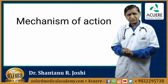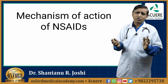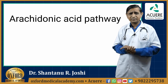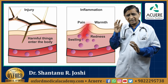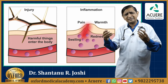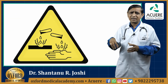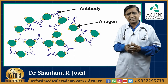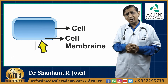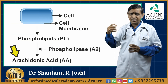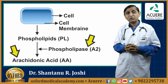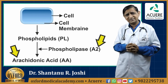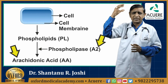First, we will see their mechanism of action. Before going into the details of mechanism of action of NSAIDs, one must understand the arachidonic acid pathway. When the cell gets injured by any stimuli — it may be physical, chemical, biological, or immunological — the cell membrane, which is made up of phospholipids, will get converted into arachidonic acid by the enzyme phospholipase. The isoform phospholipase A2 is used for the conversion of phospholipids into arachidonic acid.